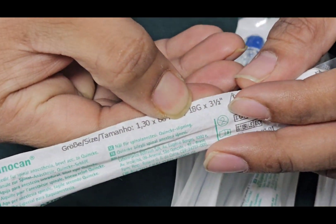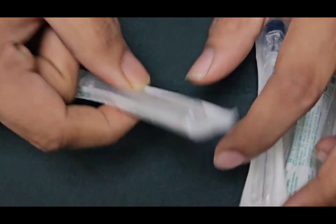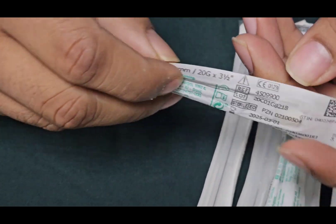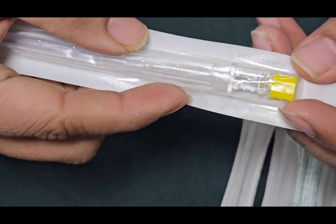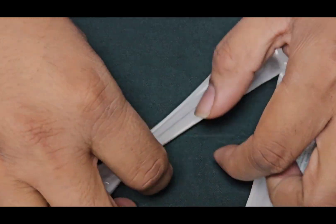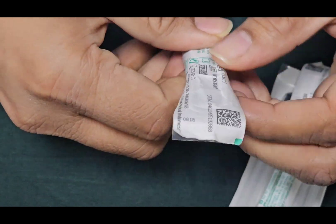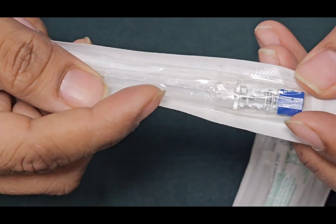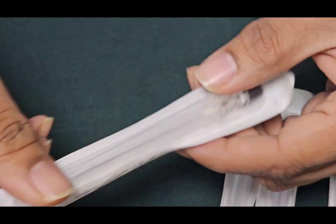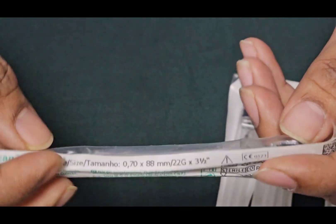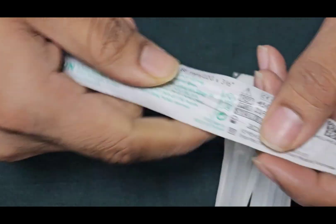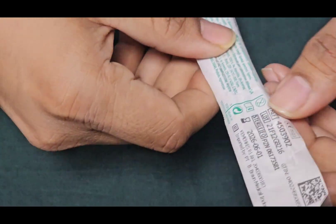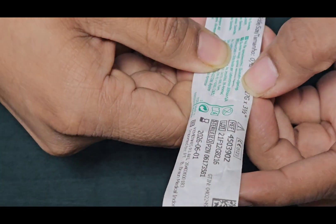This is an 18 gauge spinal needle which color code is pink. And this is a 20 gauge spinal needle whose color code is yellow. And this is a 23 gauge spinal needle whose color code is violet. And this color code is black for 22 gauge and ash for 27 gauge.